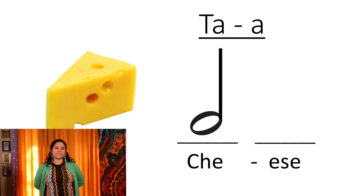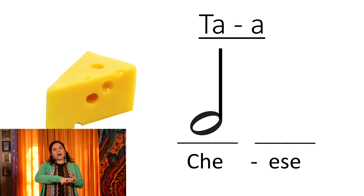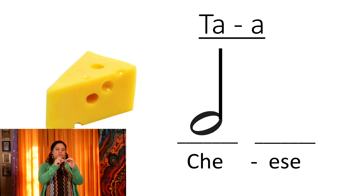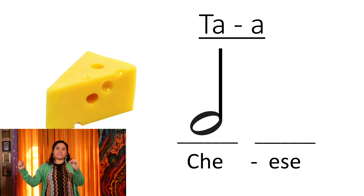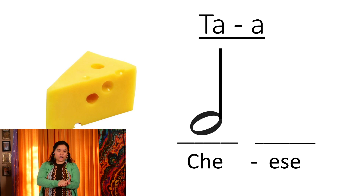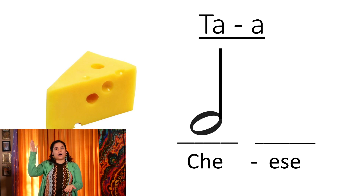The next rhythm is called TA-AH. TA-AH is also two sounds, but this one's a little bit different. Look at the beat lines underneath the note. There's one directly under the note, and then there's another one that looks like it's under nothing — it looks empty on top. That means we actually start the note on the first beat. TA-AH. Today we're gonna call it cheese.